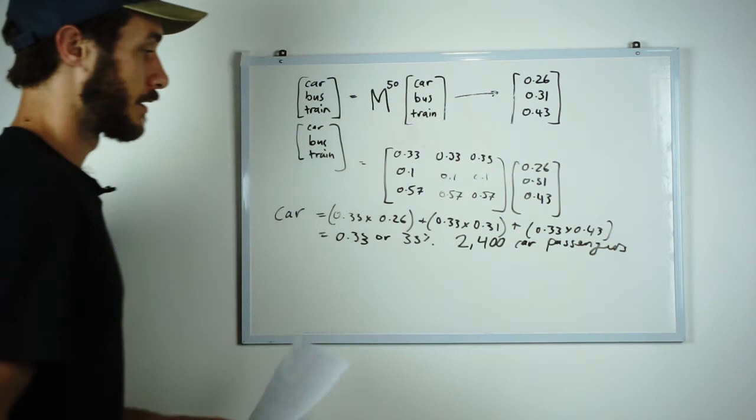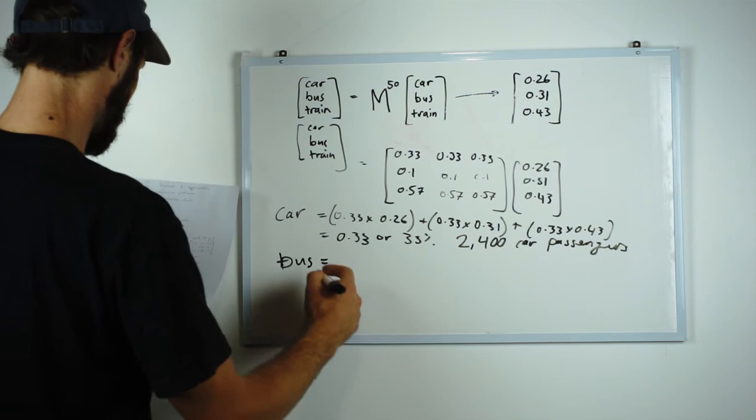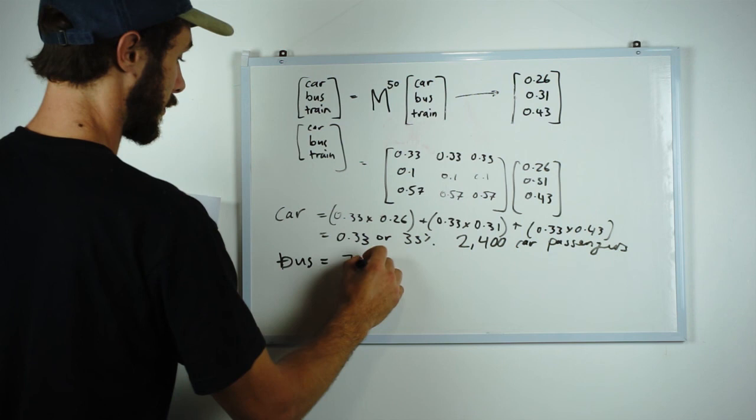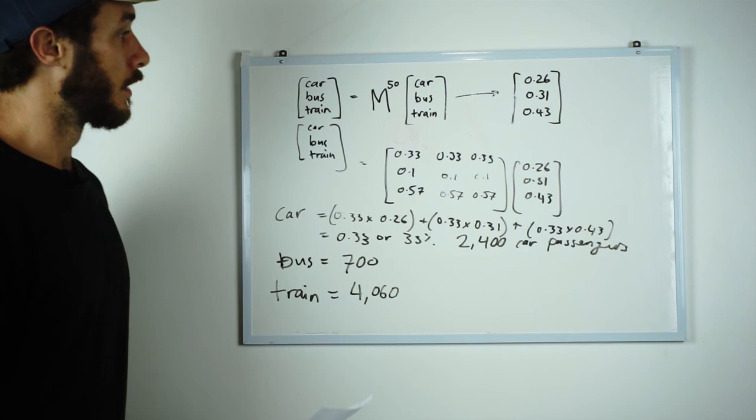Using the same technique we find that bus passengers comes out to be roughly 10% or 700 passengers and the train passengers comes out to be 4,060 or 57%. So that's solving a long-term distribution problem using a Markov chain.